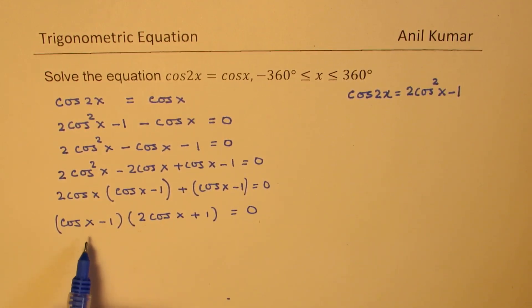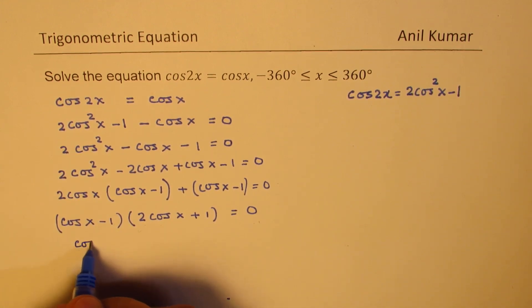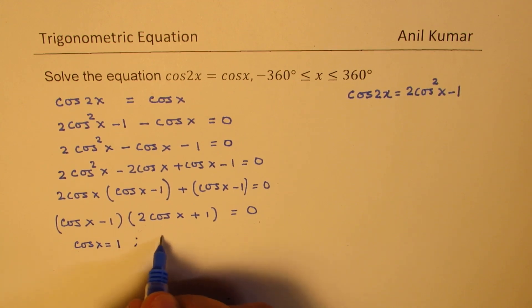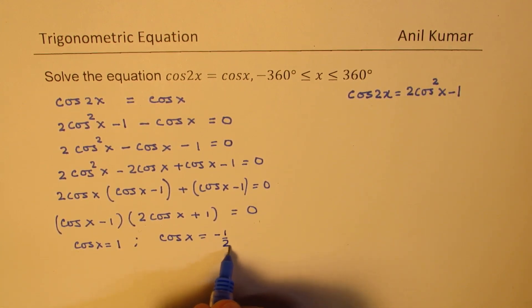Now that results into two sets of solutions. One is cos x equals 1 and the other one is cos x equals minus half. So those will be the solutions.